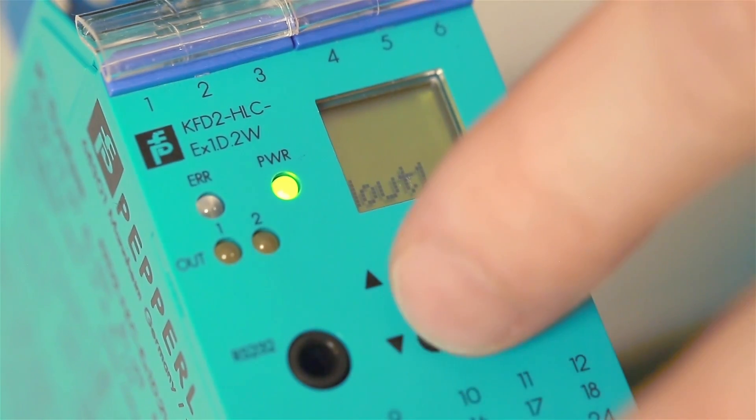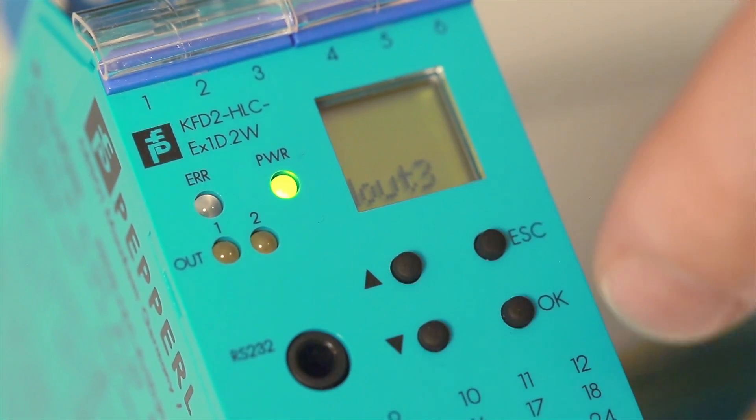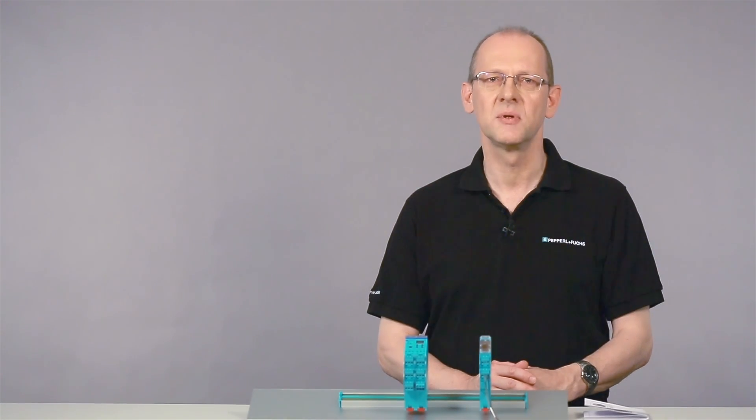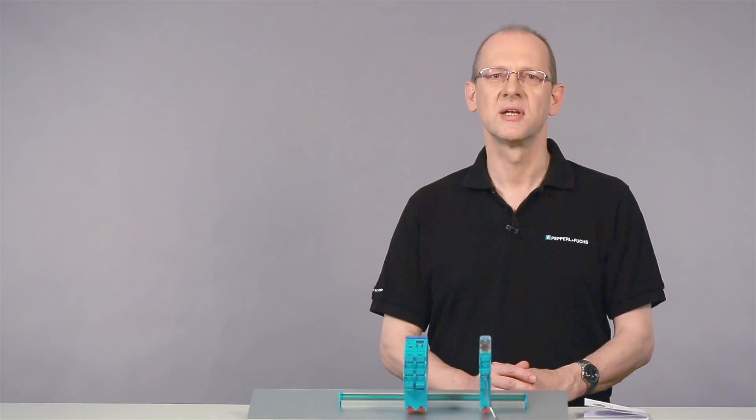Using the cursor keys, we navigate to IOUT3 and access the next level with OK. Here, it's possible to assign variables and to set the output characteristics as well as start and end values.